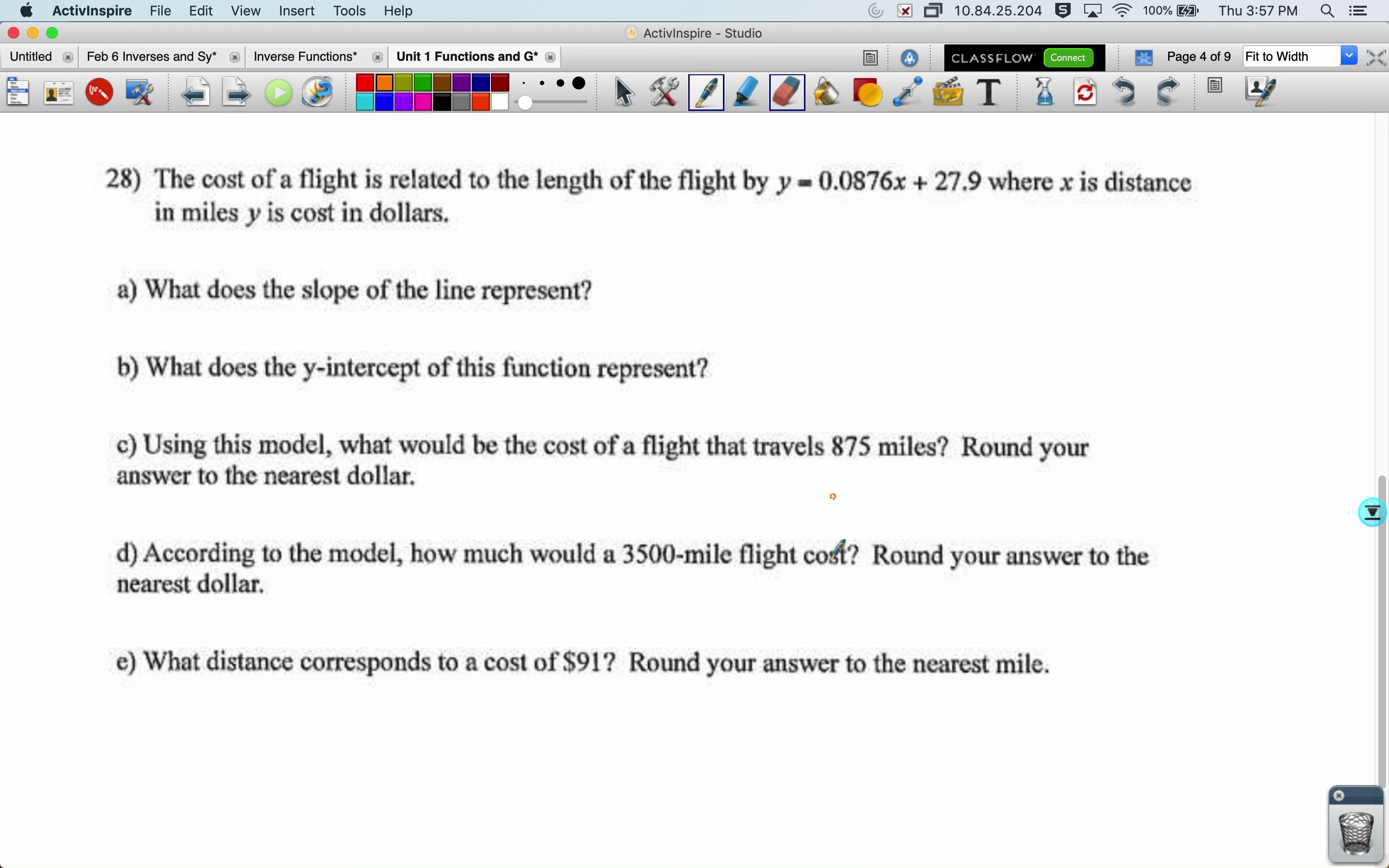The cost of a flight is related to the length of a flight by this equation, where x is distance and y is dollars. What does the slope of this line represent? So that number right there has a meaning in the context of this problem. If x is distance, then this number is modifying distance to help us come up with cost. So if it's modifying distance to come up with cost, it must be the cost per mile. So it turns miles into cost.